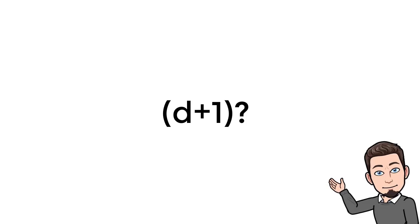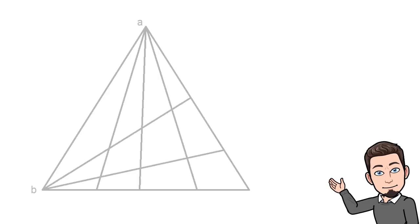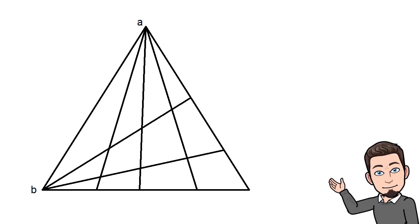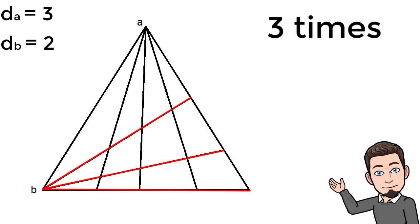We now start Chapter 2, where we have two sources only. In this case, a triangle will look like this. To prevent confusion between segments, we call the segments drawn from source A 'da', and similarly for other sources. If you pay attention, we have first-degree triangles repeated (db+1) times, which means we have (da+1)? multiplied by (db+1).